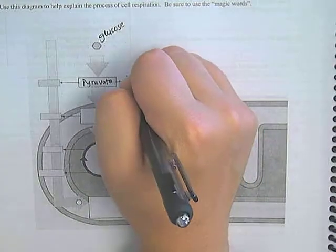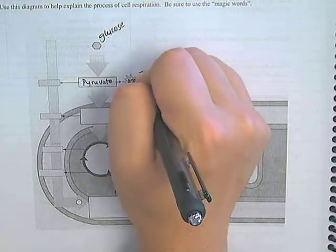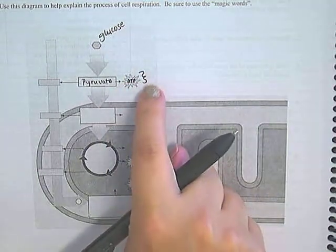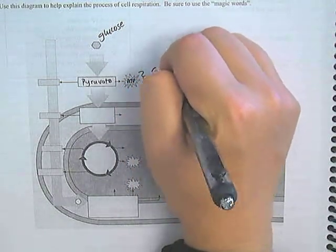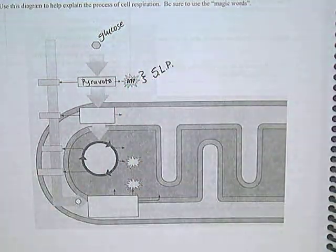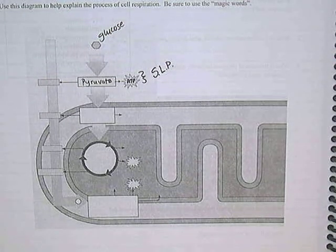In this process, not only are we going to form the pyruvate, but we're going to form some ATP. It's important that you remember that the ATP that's formed in glycolysis is done by substrate level phosphorylation.